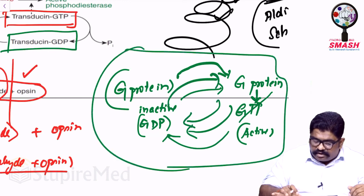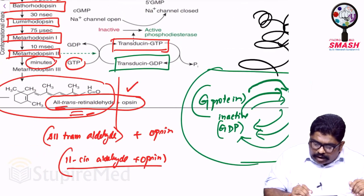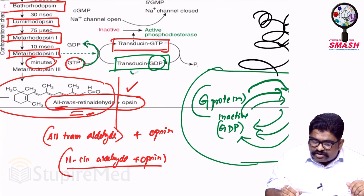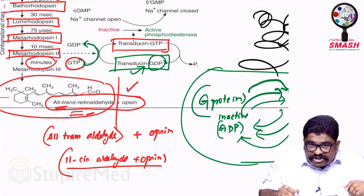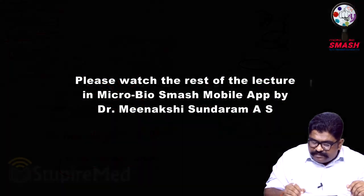Right now, I want you to understand: when the metarhodopsin happened, this converted the GTP that is outside into GDP, so that GTP's phosphate was given to the GDP in the presence of transducin. So transducin-GDP becomes transducin-GTP.